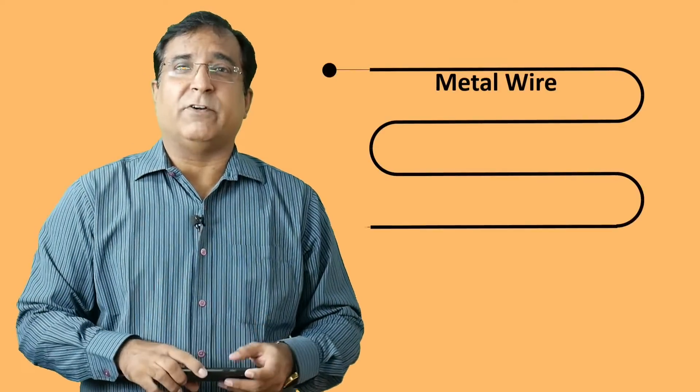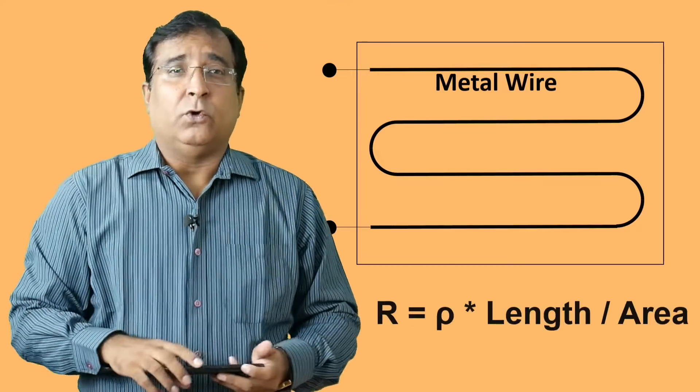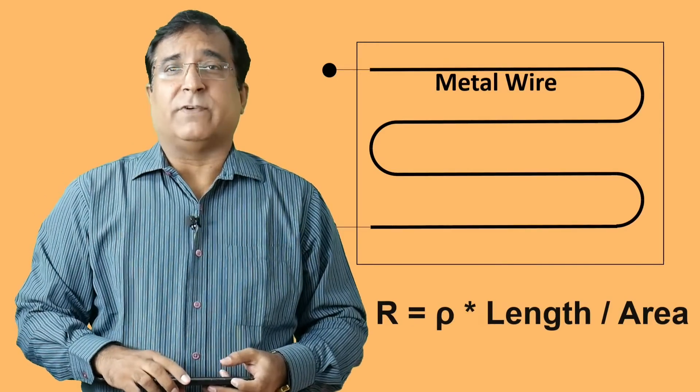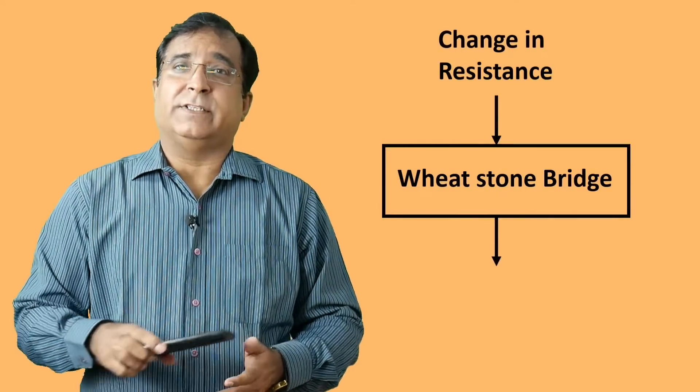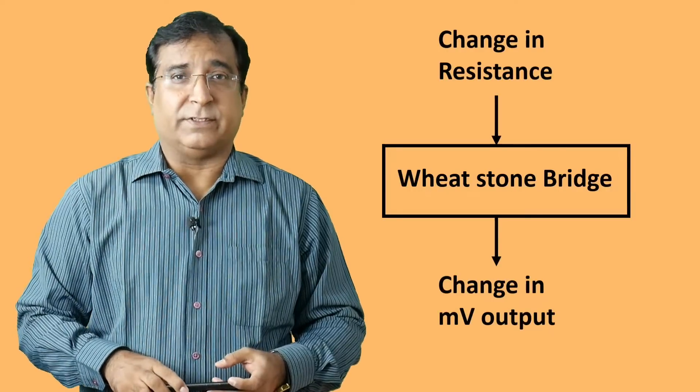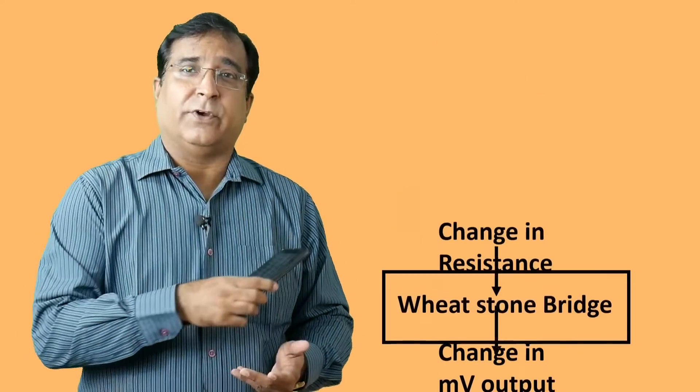The resistance of this wire is governed by this formula. So when an external force is applied to this wire its length or area gets changed. This causes its resistance to change. Now we can measure this resistance change with the help of a Wheatstone bridge as can show in terms of millivolts and also we can show in terms of kilograms or tons.